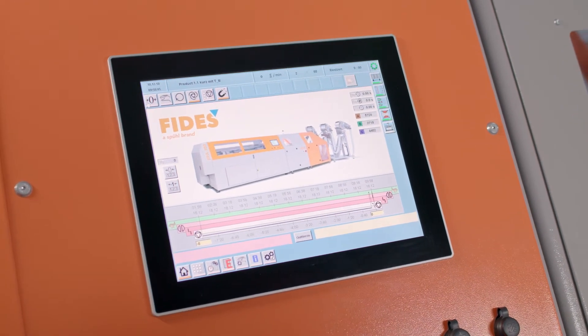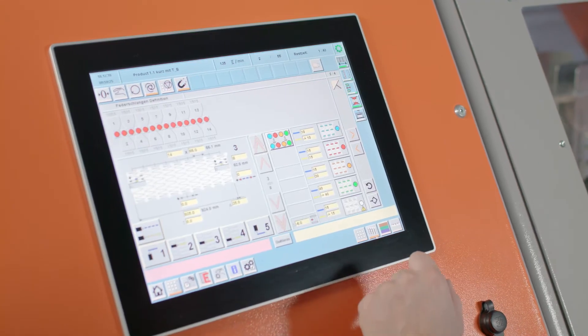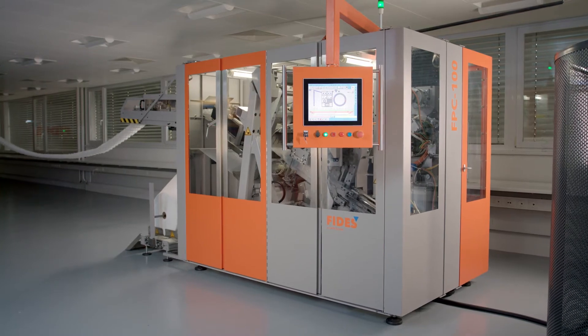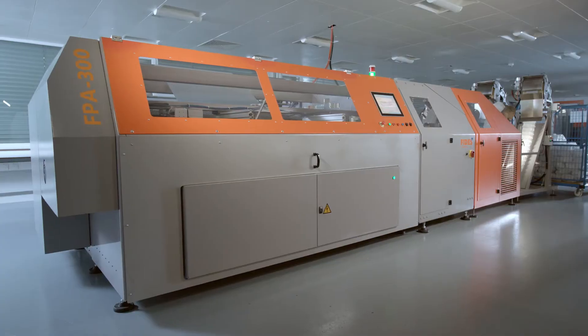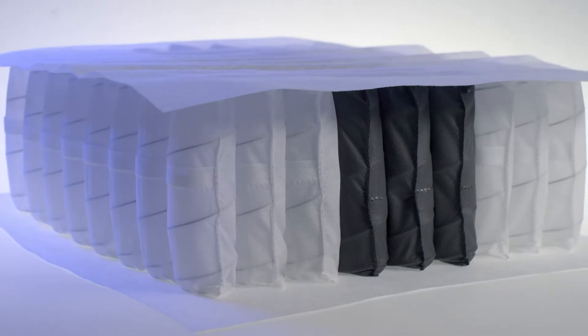The new pocket spring assembly machine Fides FPA300 is the ideal complement to the pocket coiling machine FPC100. The FPA300 is offered in two versions: middle gluing or as a top-bottom version.